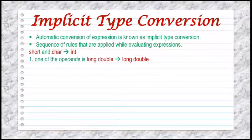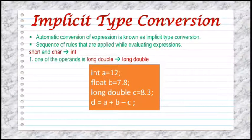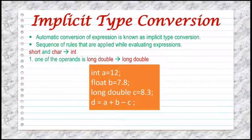Rule one: if one of the operands is long double, the other will be converted to long double and the result will be long double. That means if a long double is present in the expression, the final result will be long double. In the given example, we have declared integer, float, and long double variables. In the calculation a plus b minus c, since long double is present, the answer will be long double.